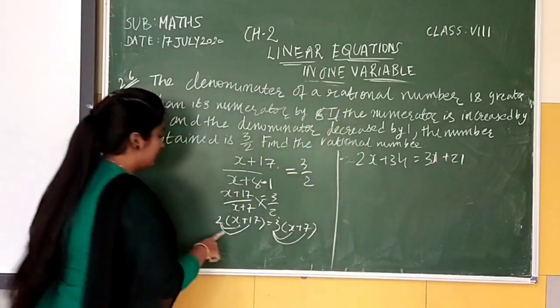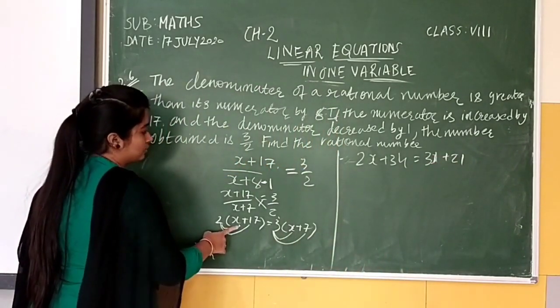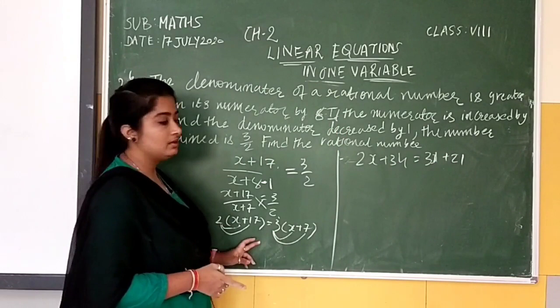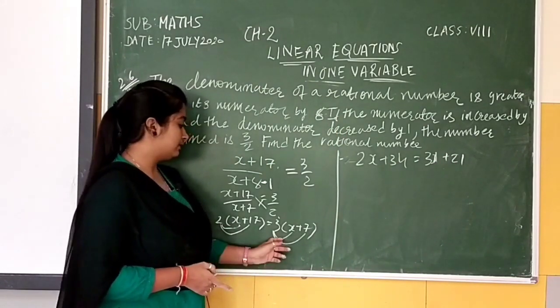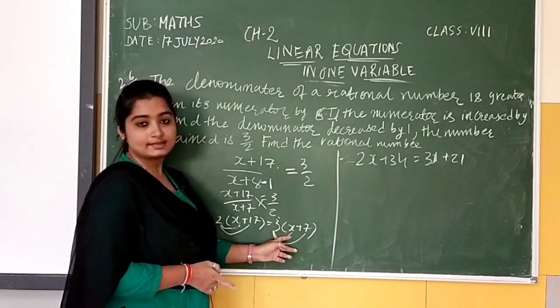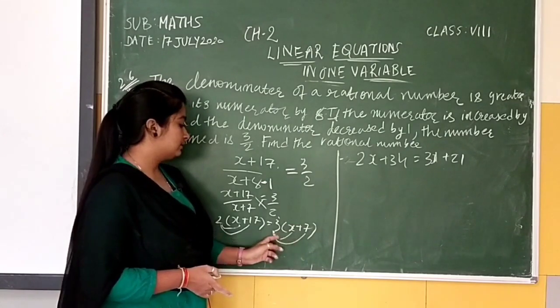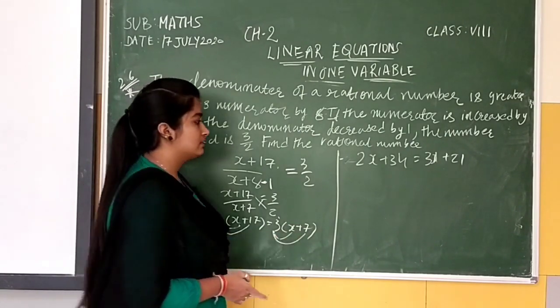You can see that 2 into X is 2X, 2 into 17 is 34, and here we have 3X, 3 into X is 3X plus 3 into 7 is 21.